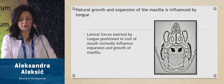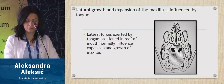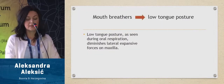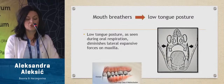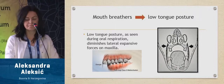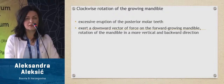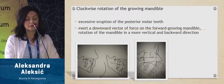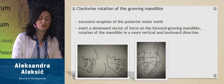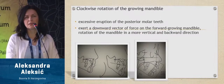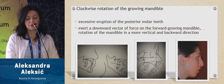Normal tongue position influences the normal development of the maxilla. In mouth breathers, the tongue drops down to the floor of the mouth, which diminishes lateral expansive forces on the maxilla, causing the absence of tooth contact over an extended period of time. This leads to excessive eruption of the posterior molar teeth and rotation of the mandible in a more vertical and backward direction, increasing lower anterior facial height, open bite, and retrognathia.